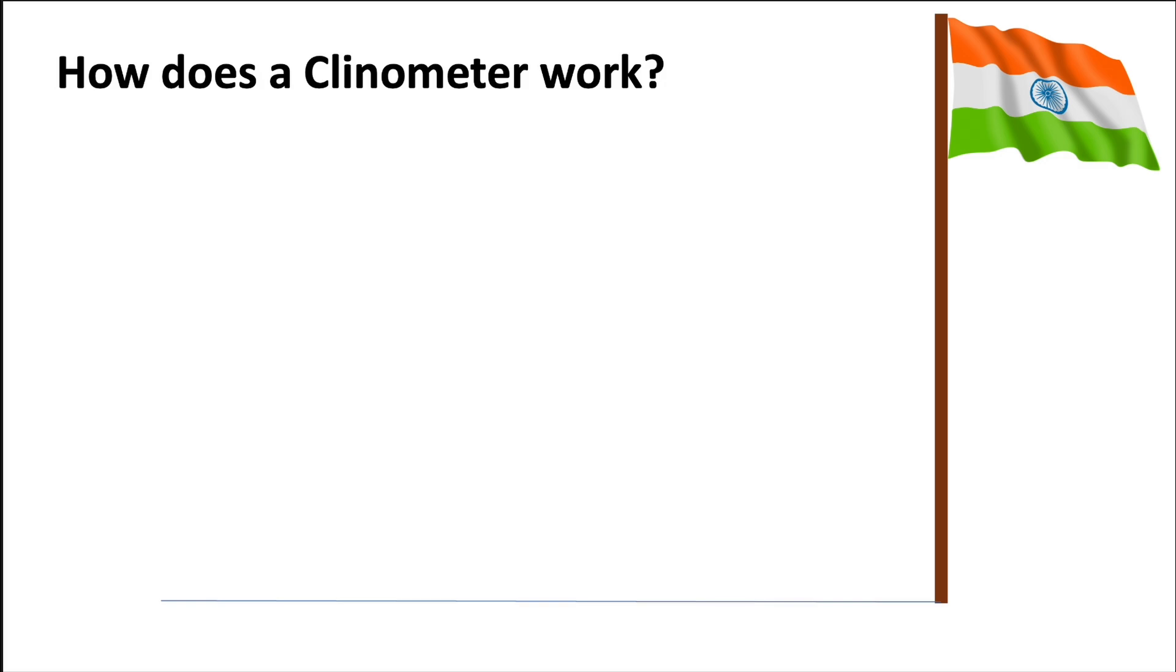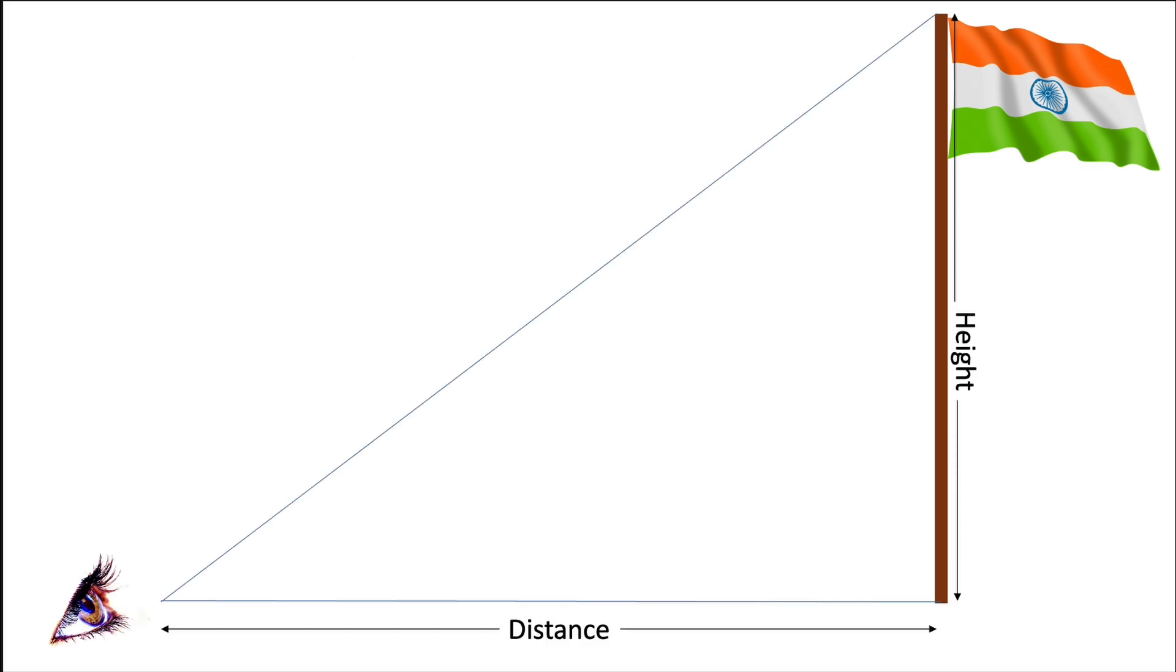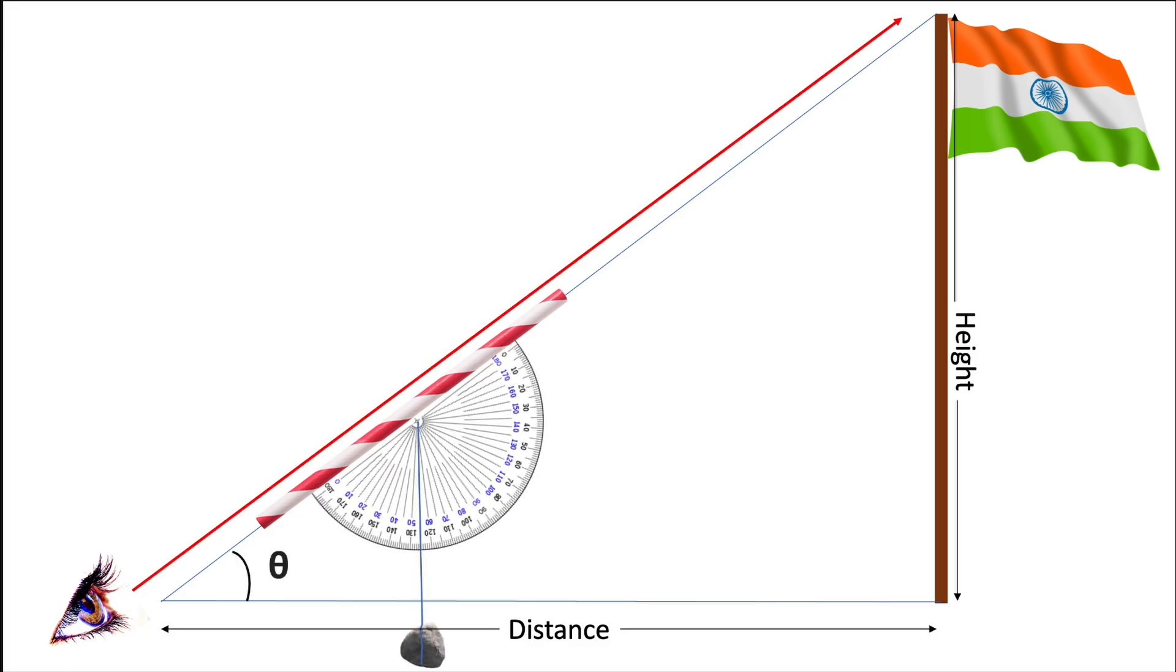To understand the working of a Clinometer better, suppose we have to measure the height of a flagpole. We can achieve this by looking through an empty straw attached to a protractor with a freely suspended weight.